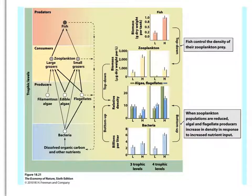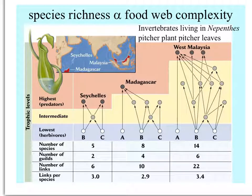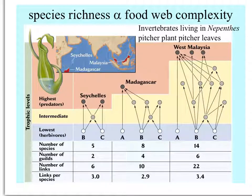Here's a diagram showing this food web trophic pyramid, with fish at the top controlling the density of their zooplankton prey. Those zooplankton in turn eat algae, so when zooplankton are fewer, algae and flagellate producers increase in response to more nutrient input. In these trophic pyramids, the more species richness there is, the greater the food web complexity. With only a few species, interactions are more direct; the more species there are, the more interactions within each trophic level as well as between trophic levels.